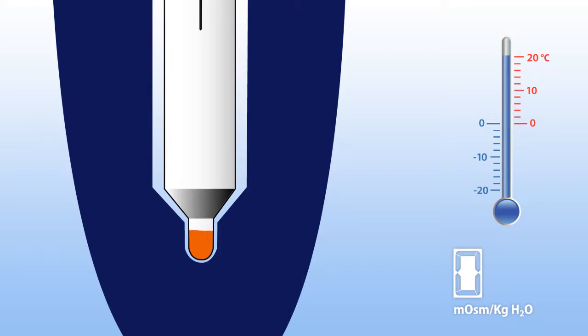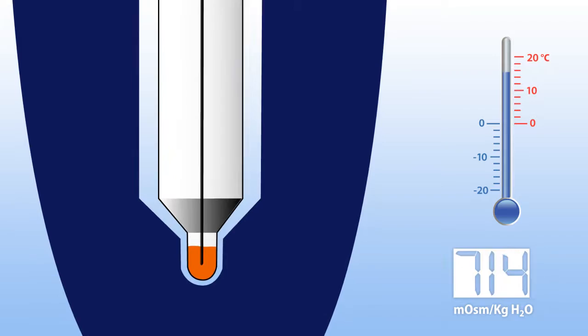Let's take a closer look at what happens inside the osmometer when a freezing point measurement is made. Once a sample is introduced in the cooling chamber, it is rapidly supercooled to a predetermined temperature below the expected sample freezing point.